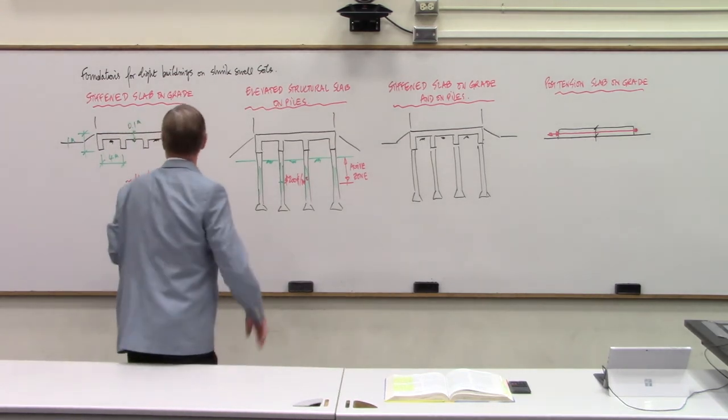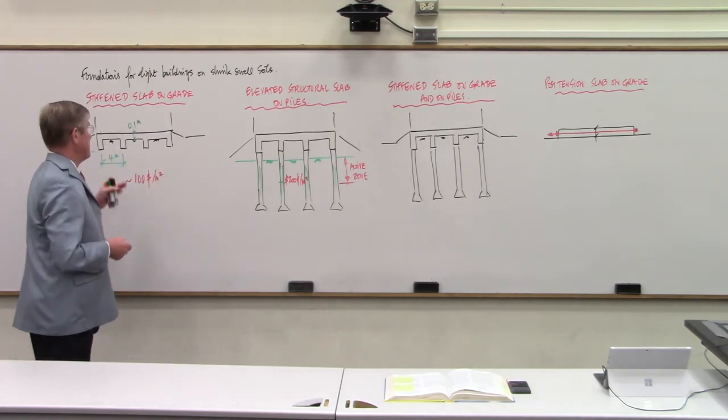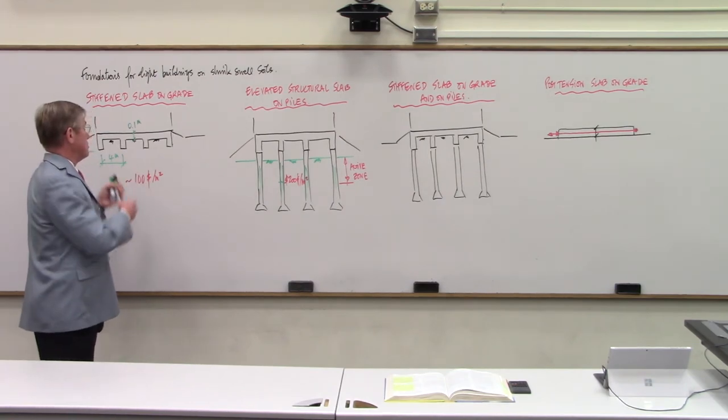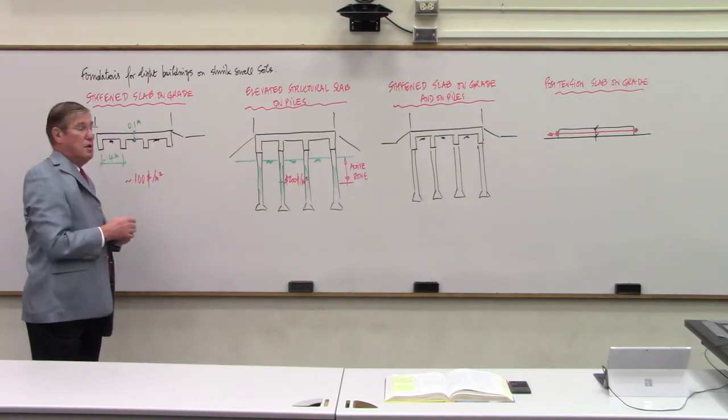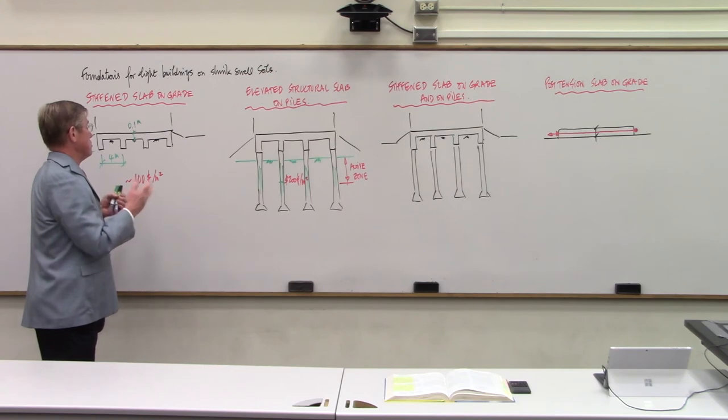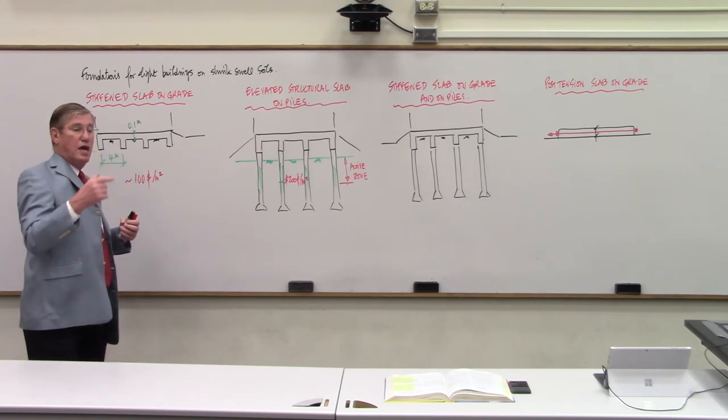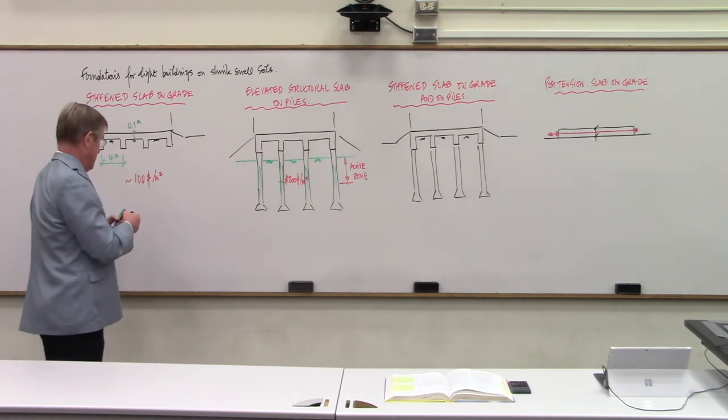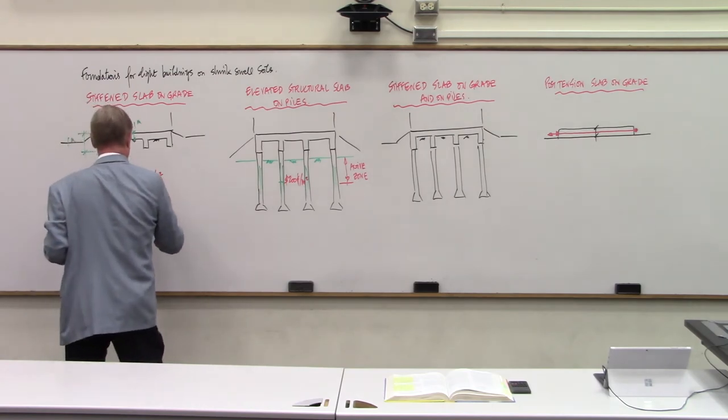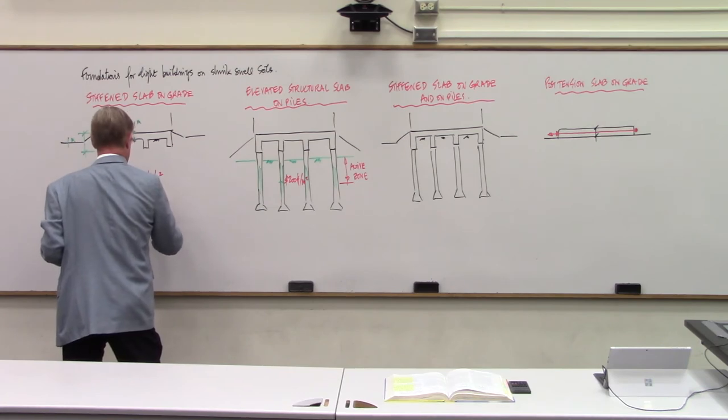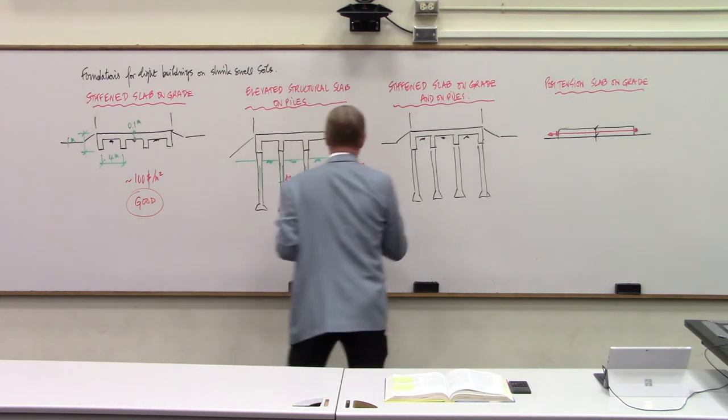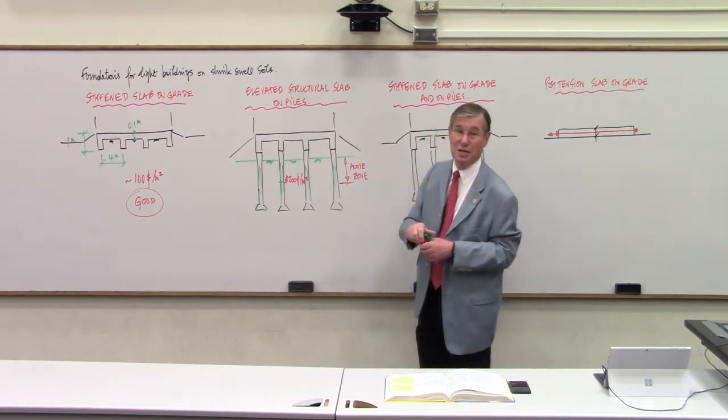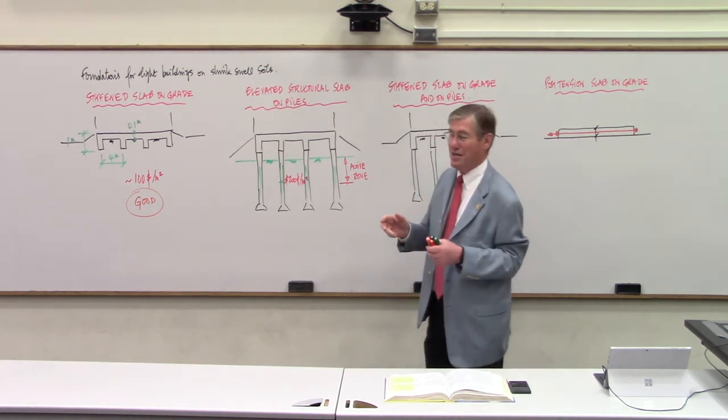These are the four types of solutions that we have for foundations on shrink-swell soils. Let's discuss a little bit about those. This one, I like it. I like it because it's not very expensive, and you can really control the stiffness by deepening the beams or putting them closer together. You can do the design on the basis of what type of EI, modulus times moment of inertia, bending stiffness of that particular size. So this one, I like it, and we're going to put a grade of good here.